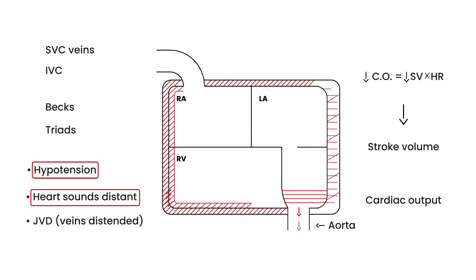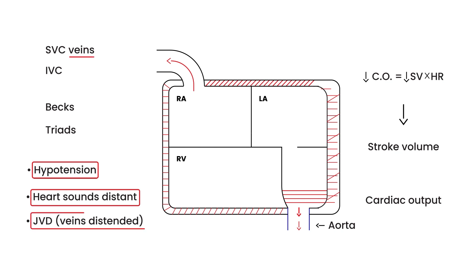The third component is jugular venous distension. The blood built up in the pericardium compresses the right atrium and right ventricle, making them smaller. This causes fluid to back up into the veins, and when that happens, the neck veins become distended. Remember Beck's triad — don't just memorize it. Go back to the diagram and understand why each of these happens.